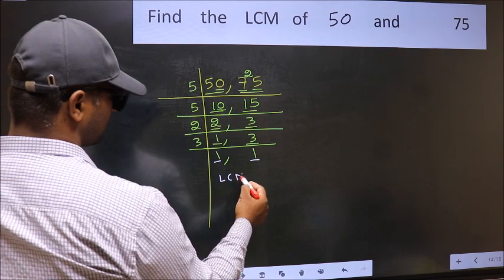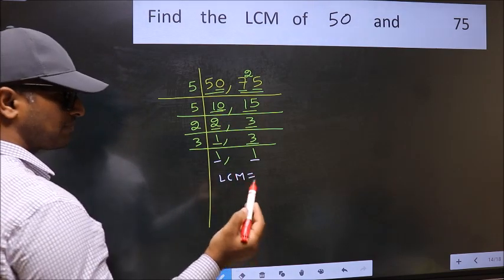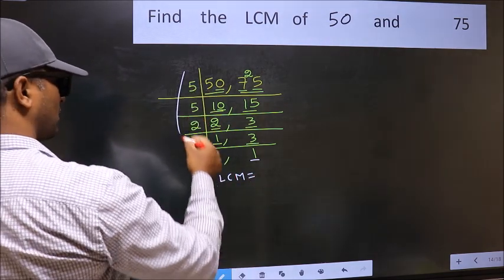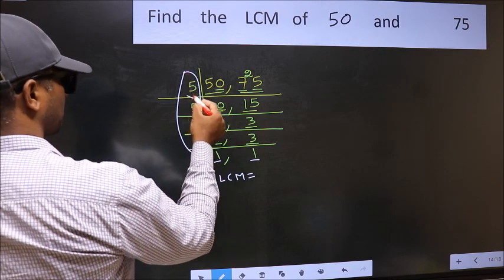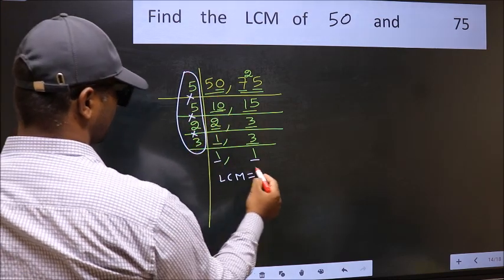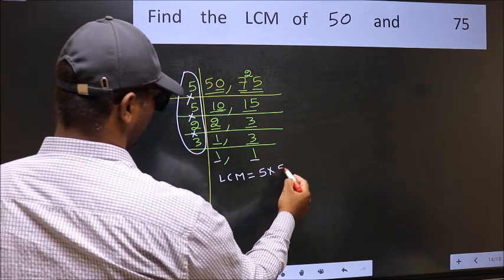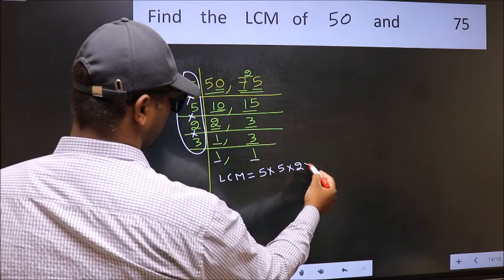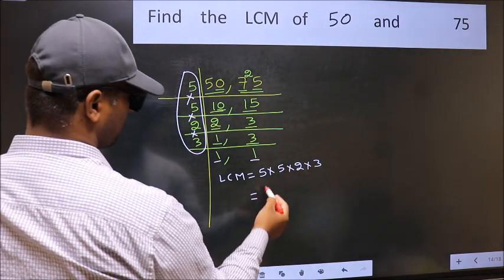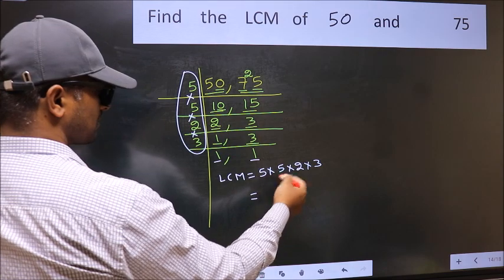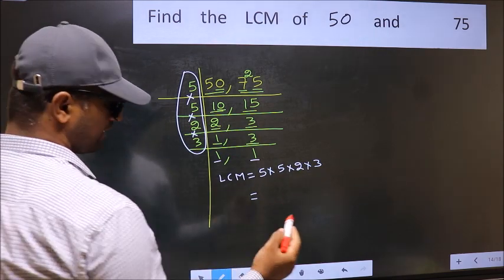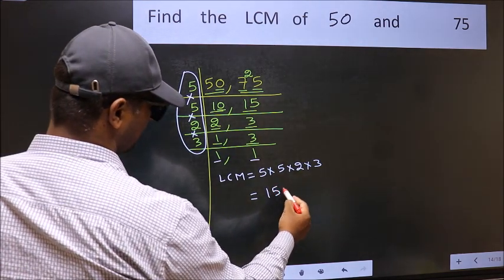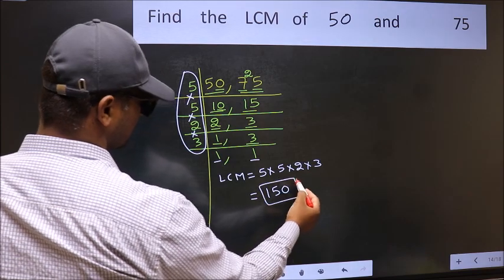So our LCM is the product of these numbers, that is 5 into 5 into 2 into 3. When we multiply these numbers, we get 150 as our LCM.